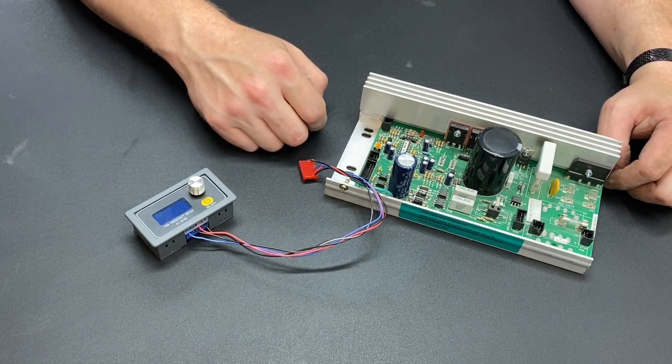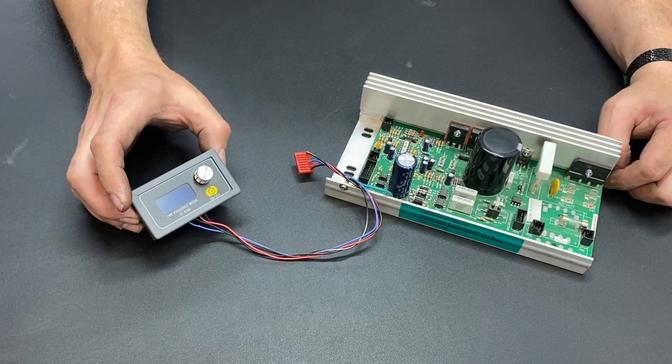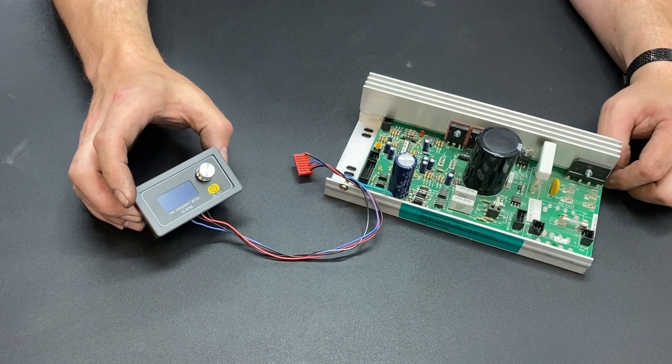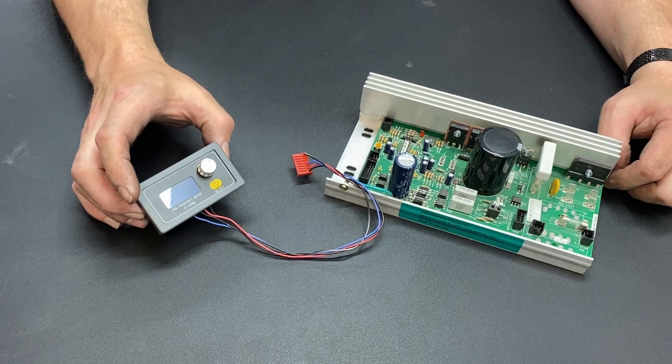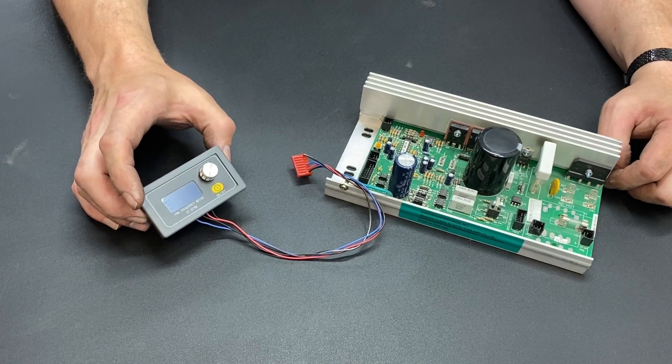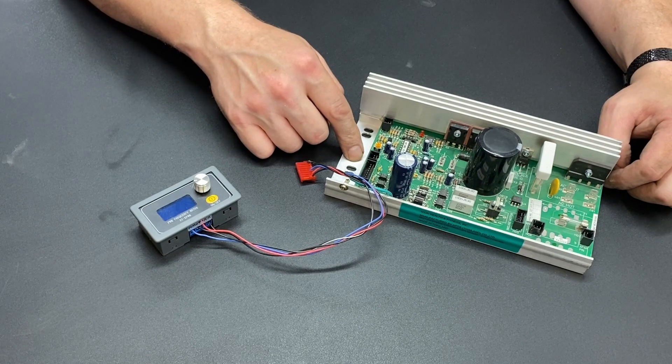The biggest difference is amperage. This is not designed to have massive amounts of electricity flowing through it. This is designed for very low voltage, very low amperage, just a very small signal, and this is designed to have high amperage and high voltage.